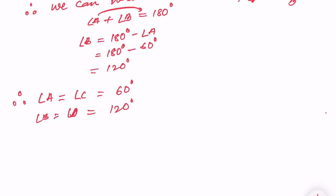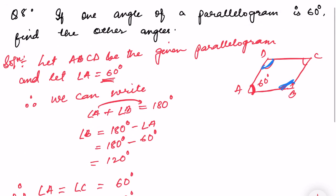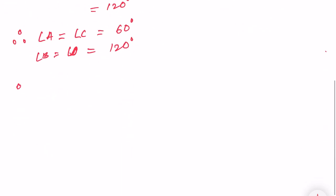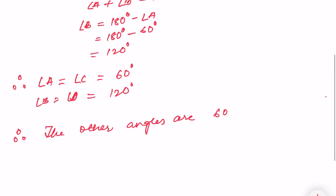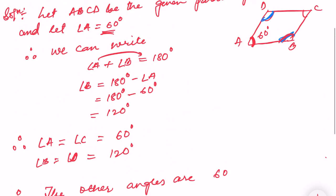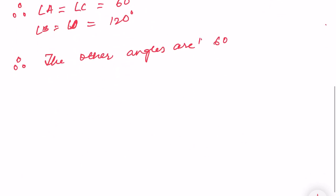So the other angles are: angle A = 60°, angle B = 120°, angle C = 60°, and angle D = 120°. That's all. This is how we write the answer. Thank you so much, we will meet in the next video.